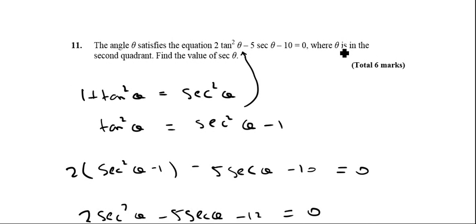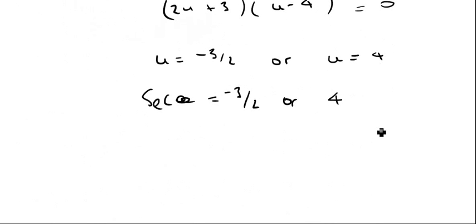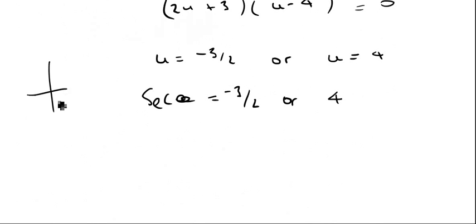I've not quite finished yet because it's told me that θ is in the second quadrant. So let's just draw that little CAST diagram again. Okay, this is the second quadrant here. This is saying that only sine is positive. Well, sec is 1 over cos. Well, cos is going to be negative, and therefore 1 over cos is going to be negative. Therefore, this is going to be my answer. So sec θ is minus 3/2.